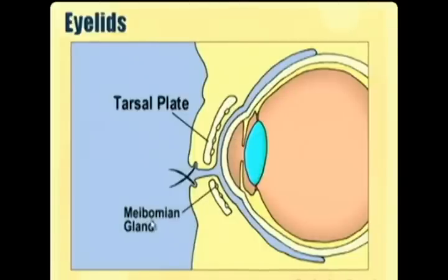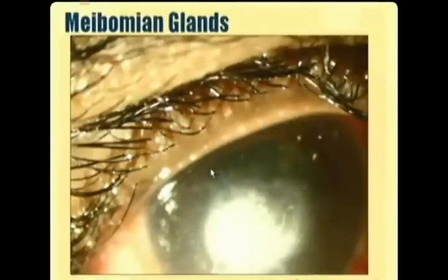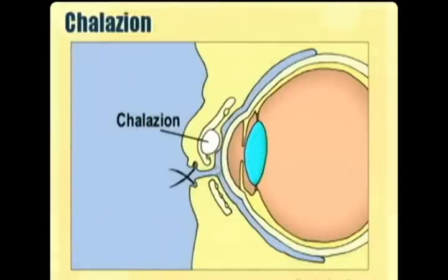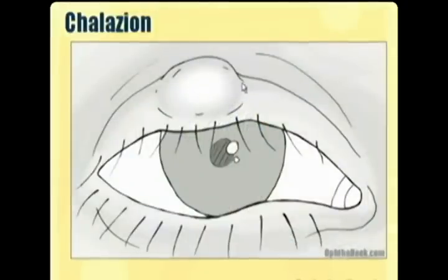Inside the tarsal plate are the meibomian glands. The glands sit inside the plate and squirt oil through little pores at the base of the eyelids into the tear film. You can see little pores right along the edge of the eyelids where oil is expressed into the tears. This oil is important to keep the tears from evaporating too quickly. A chalazion can occur if one of those pores gets clogged, causing a backflow of lipid into the gland and a granulomatous reaction.